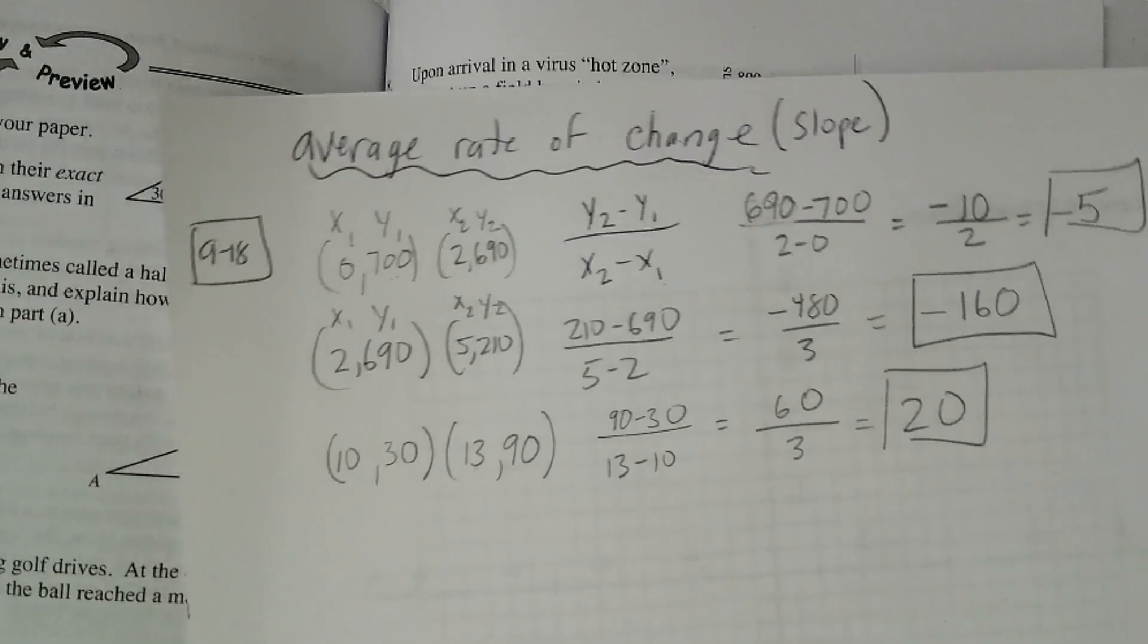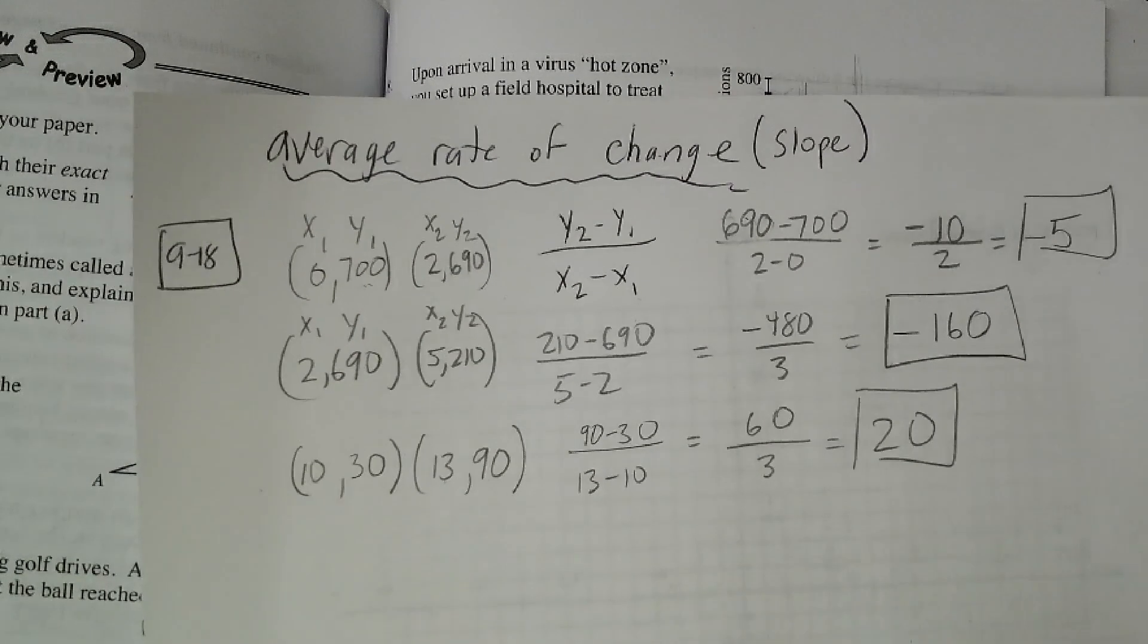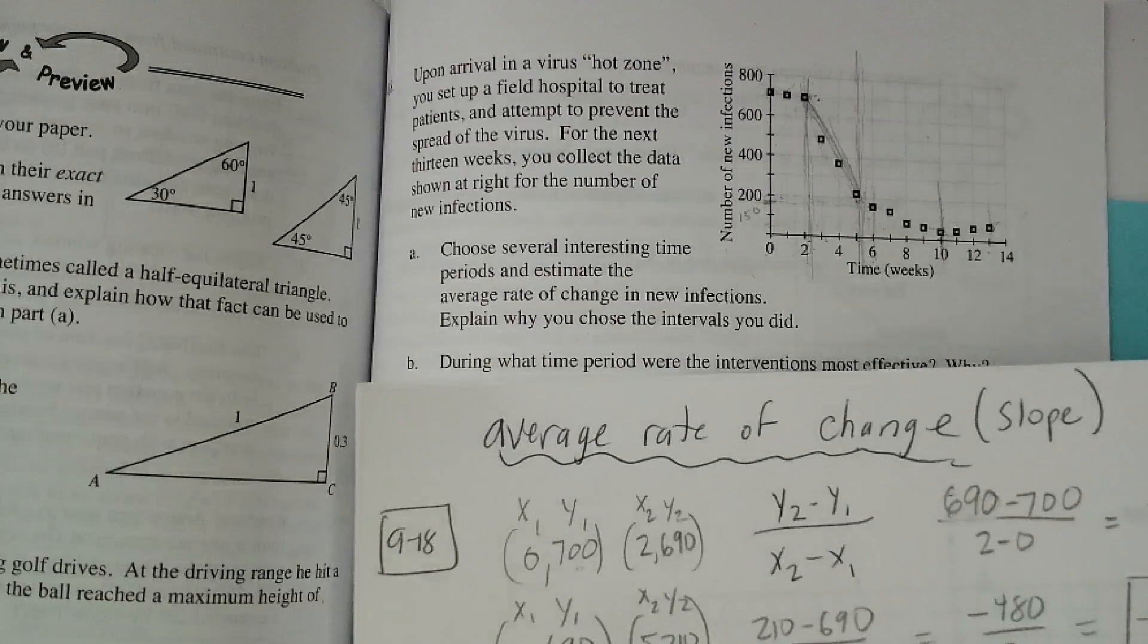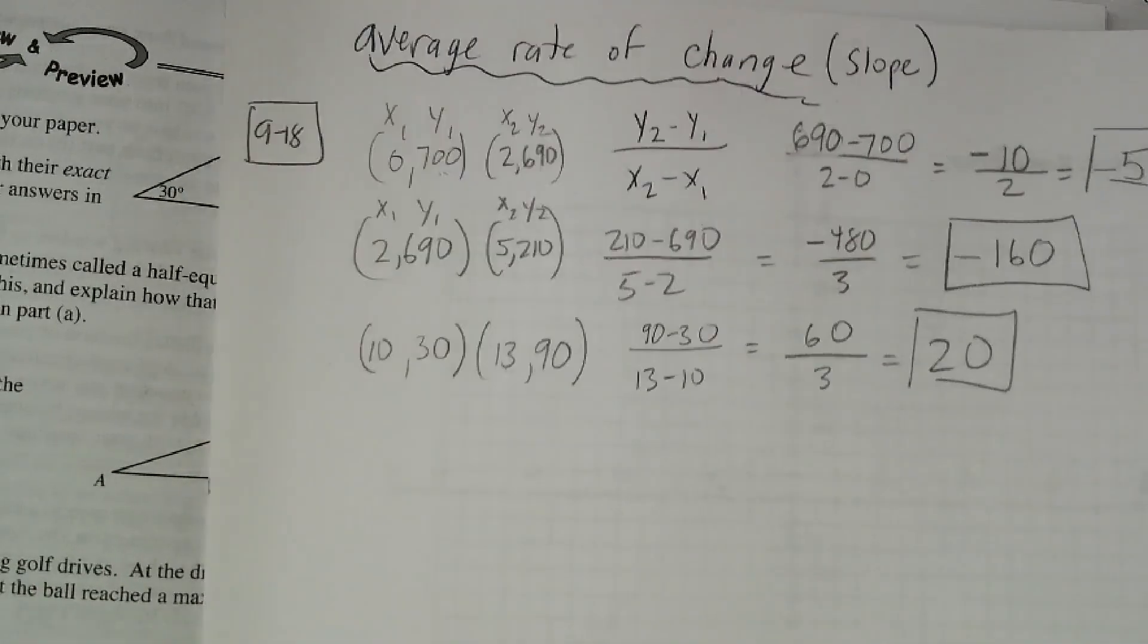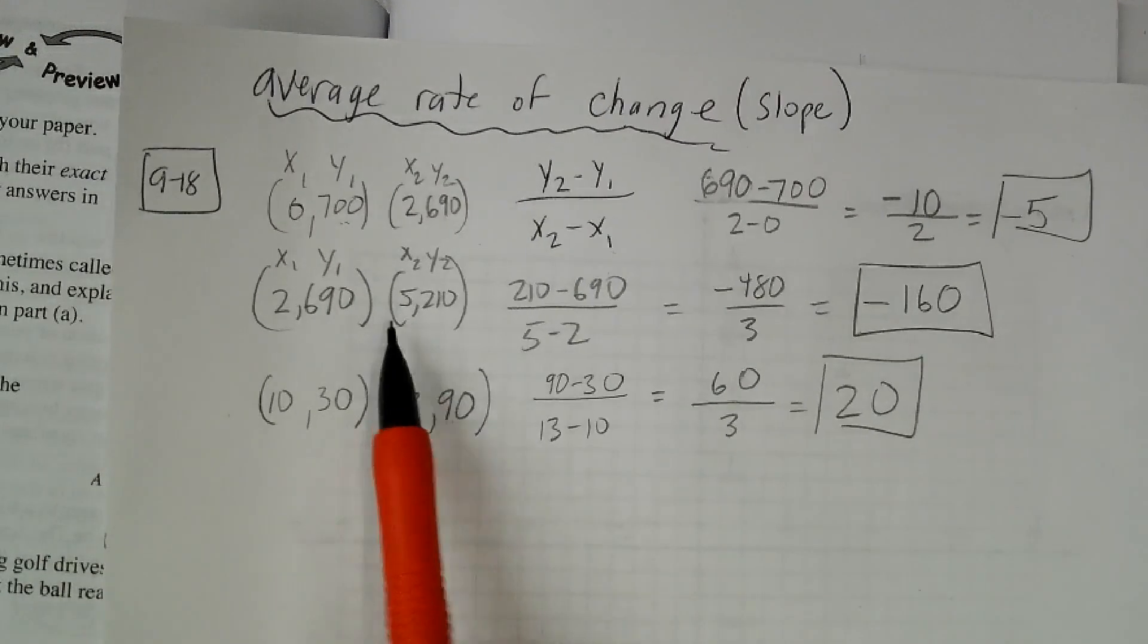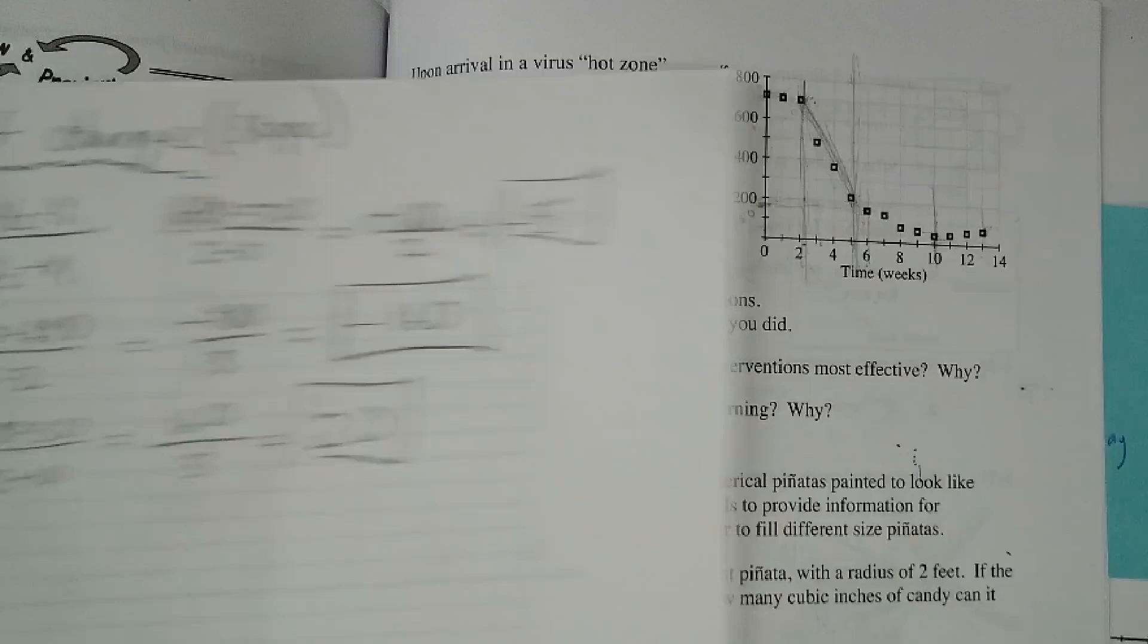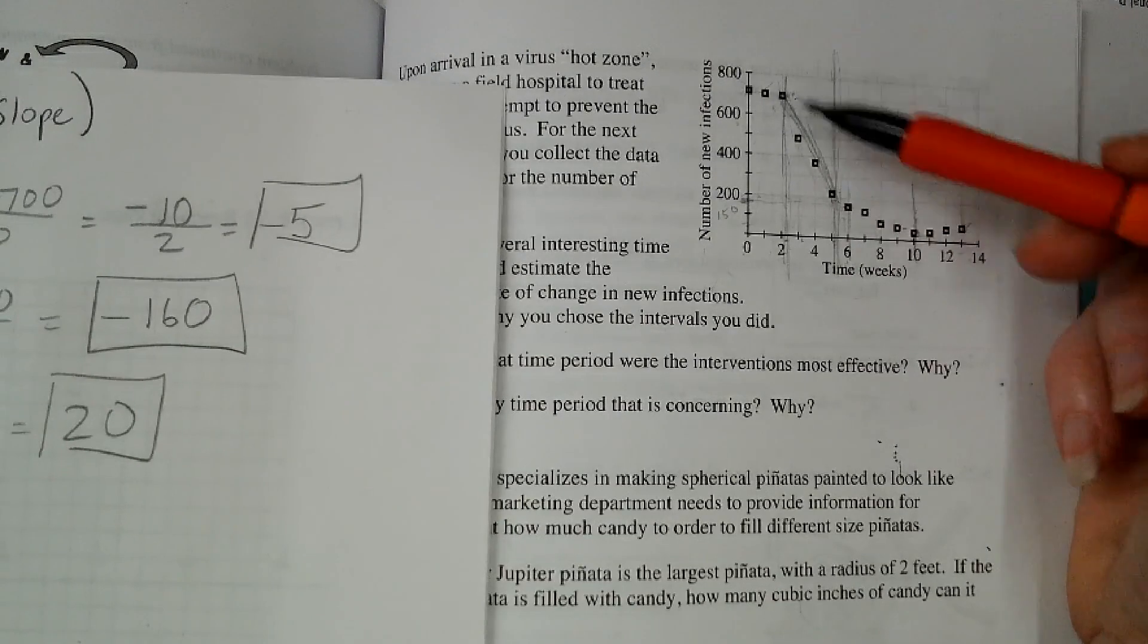That's what average rate of change is. And I explained why I chose the different intervals. You could have chosen different other intervals if you think they're interesting. During what time period were the interventions most effective? I think during the time period between two and five weeks, they went down by a lot of cases. So they were getting a lot fewer infections on the very steep part of the graph where it's very steep. So that's my answer.